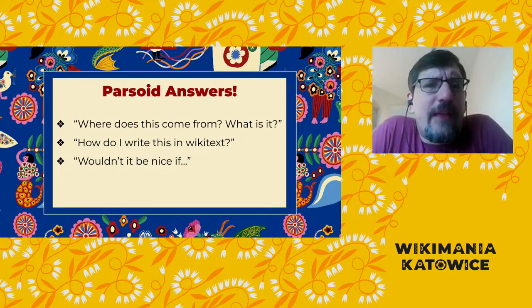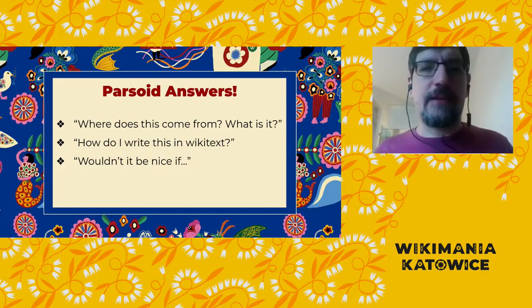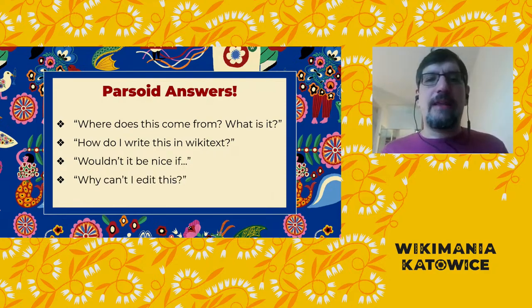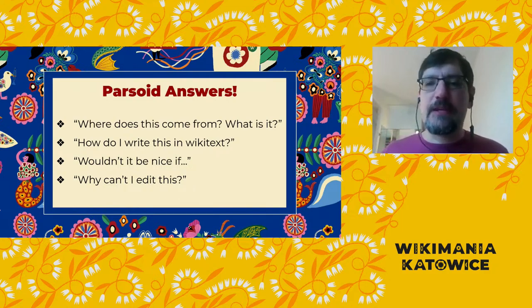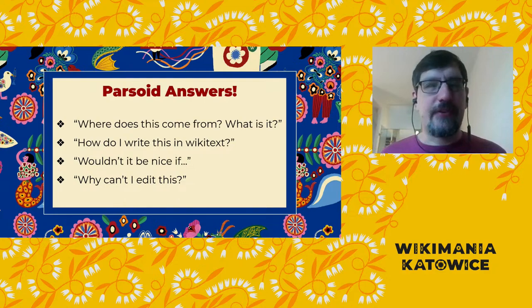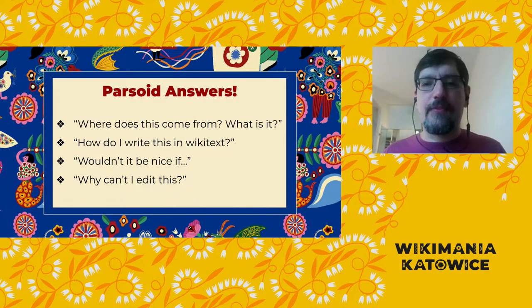Wouldn't it be nice if Wikitext would let me write this more easily? Our ultimate goal with Parsoid is to enable new Wikitext features, and we're eager to hear from you what those ought to be. Why can't I edit this? This isn't related to your permissions on wiki per se, but there are certain templates which are uneditable for technical reasons — usually because they are frequently used, and thus every edit causes reparsing of hundreds or thousands of other pages, and our servers can't take too much of that. The incremental rendering features we are exploring in Parsoid will help reduce the back-end impact of edits to these frequently used templates, and that in turn may allow fewer of these to be protected, and thus allow you to edit more.